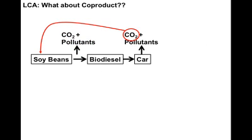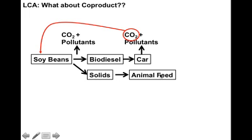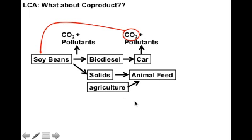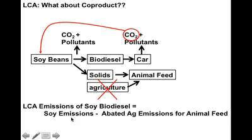What about co-products? When you make biodiesel from soybeans, the biodiesel isn't the only output — you also get a co-product of solids that have nutritional value, usually used for animal feed but can be used for human beings. To account for this, we ask: what energy would have gone into producing that animal feed, and what emissions would result from growing it agriculturally? We subtract those agricultural emissions from the original emissions of our soybeans.